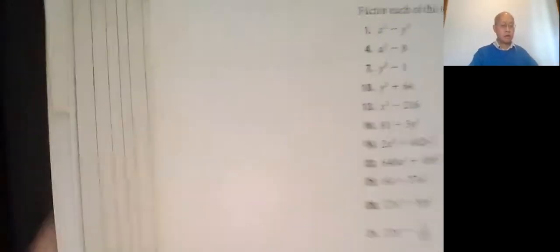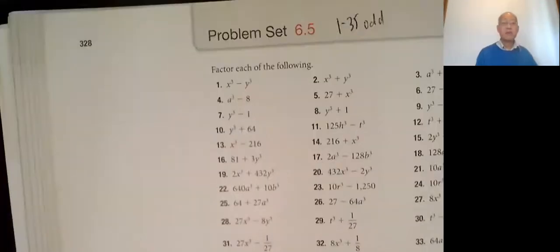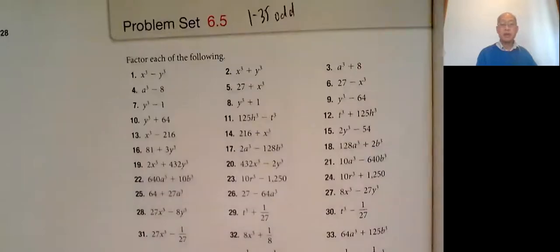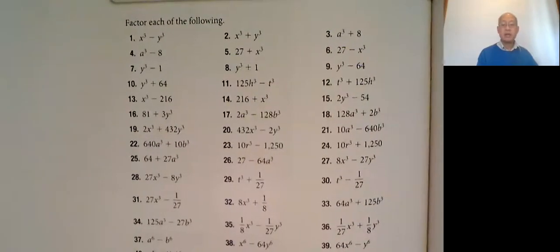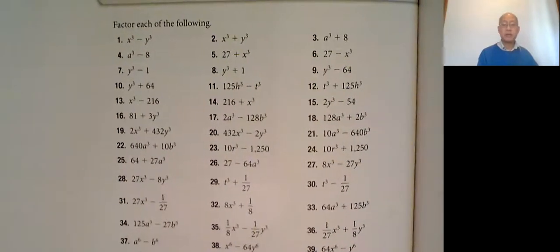Here's your notes for section 6.5. Section 6.5, page 328, 1 to 35 odd.